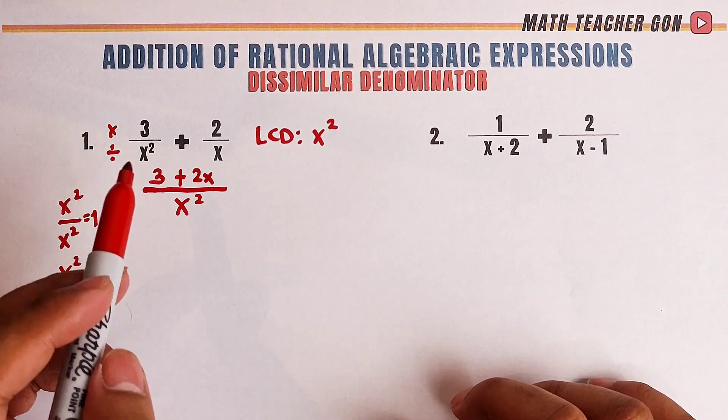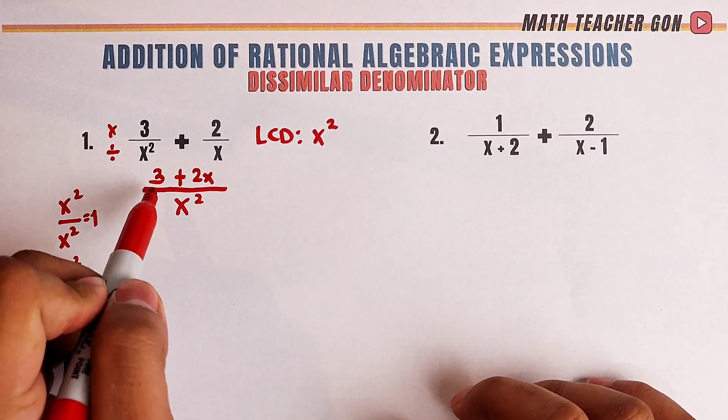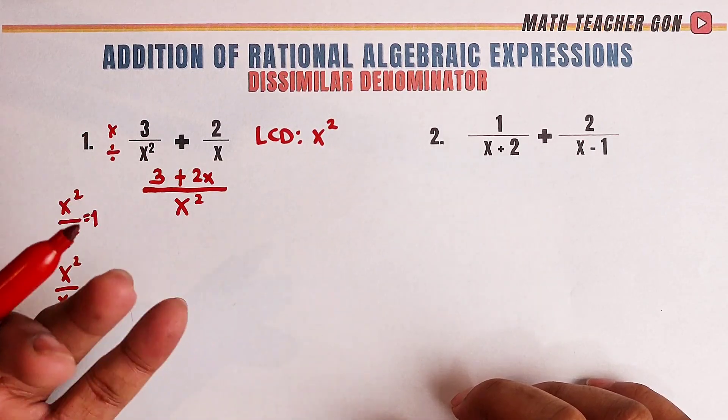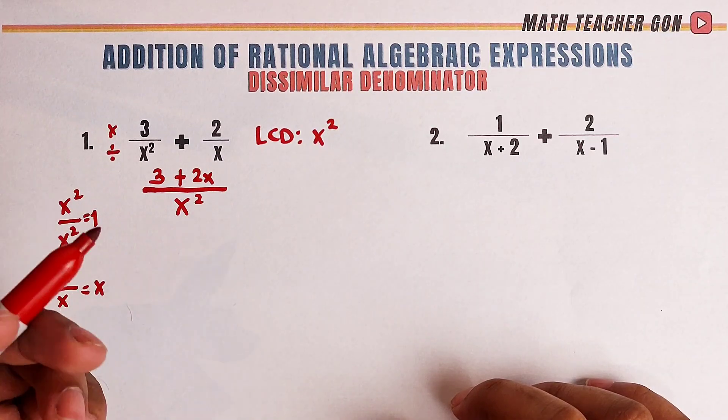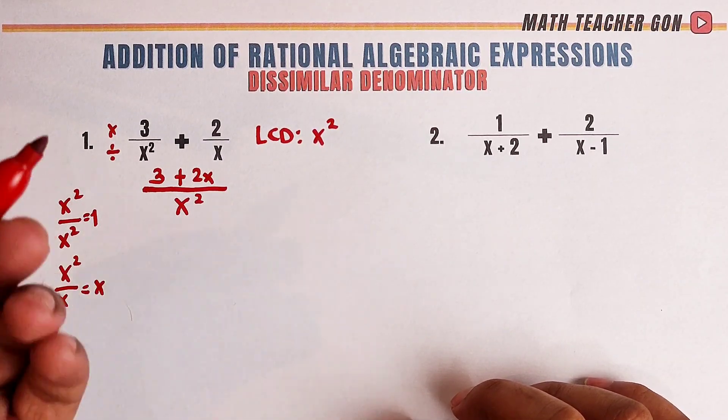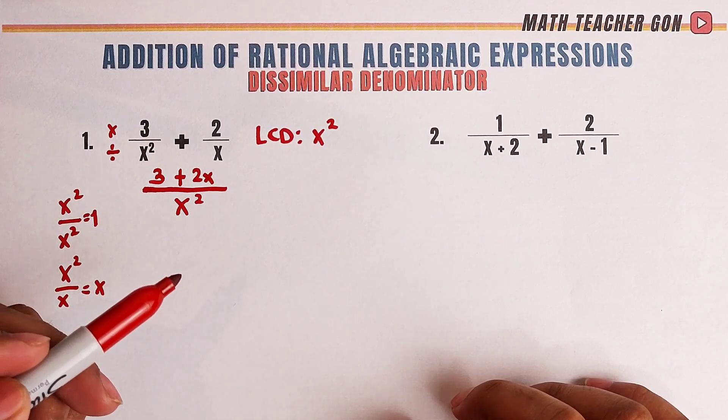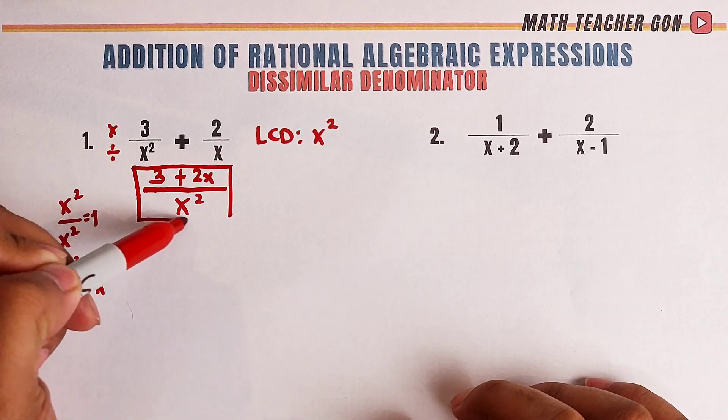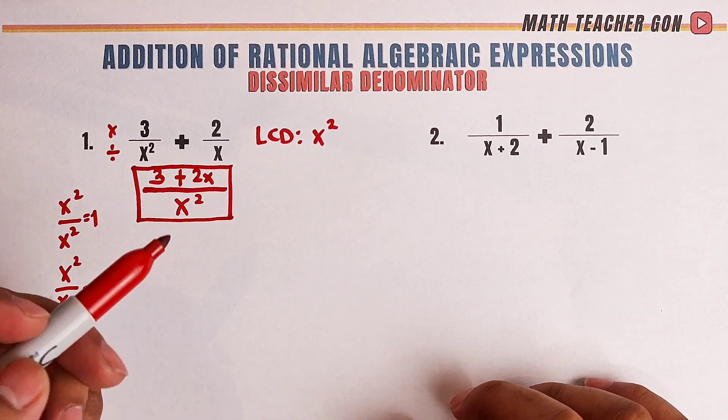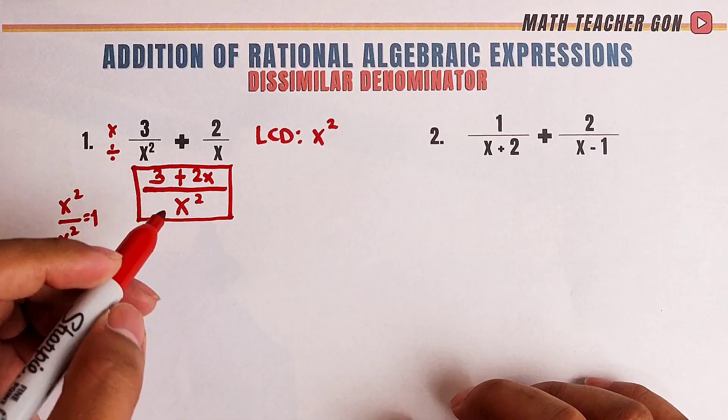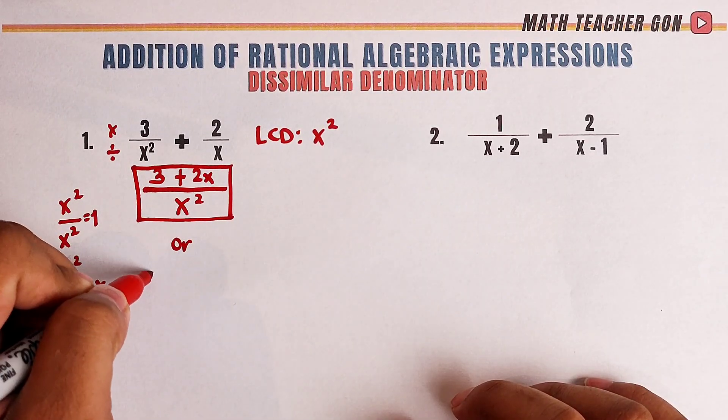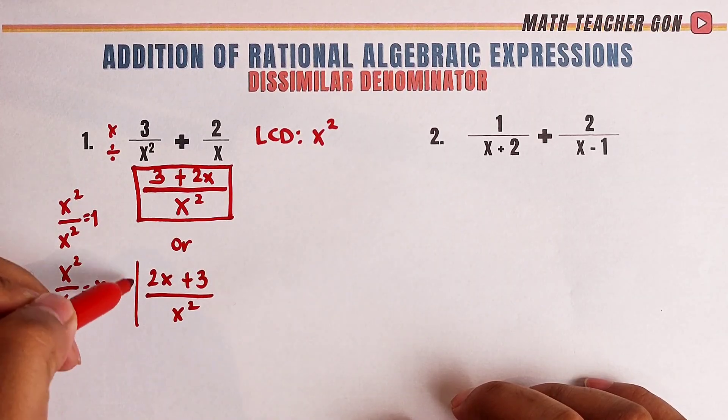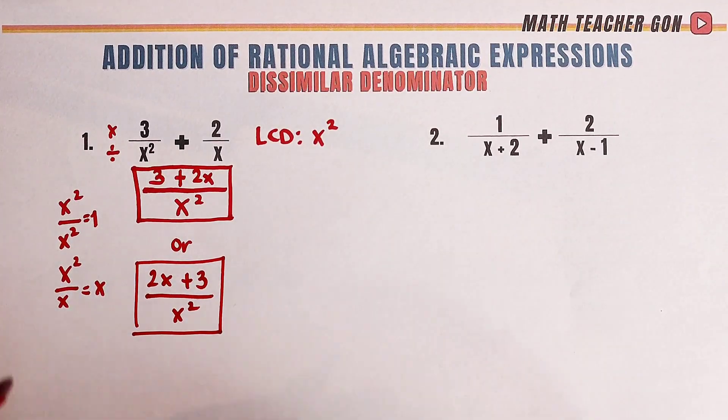After this, what we need to do is check if we can combine the numerator. We have 3 plus 2x and as you can see, they are unlike terms. So we can't combine. So the question here, do we have to simplify? No. And is this a final answer? Maybe. We can also declare this one as our final answer. But we can still arrange this one like this. Instead of 3 plus 2x, we can do 2x plus 3 over x squared. So the variable is in the first term. As simple as that.